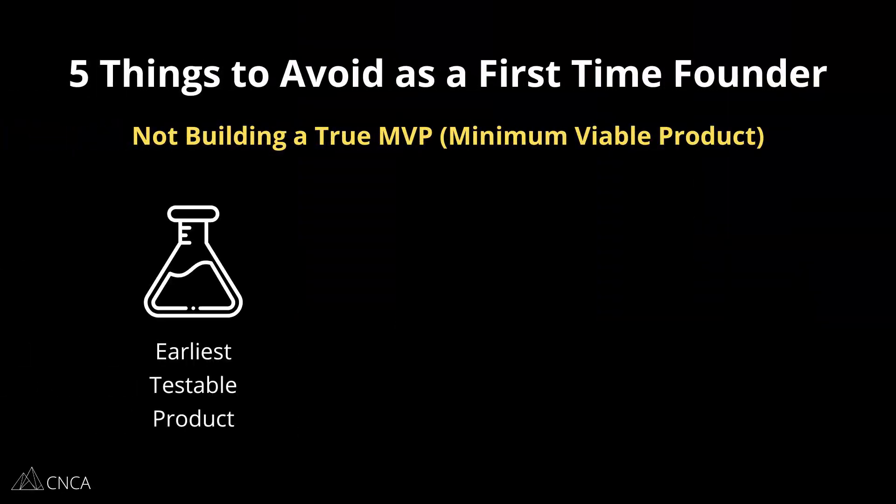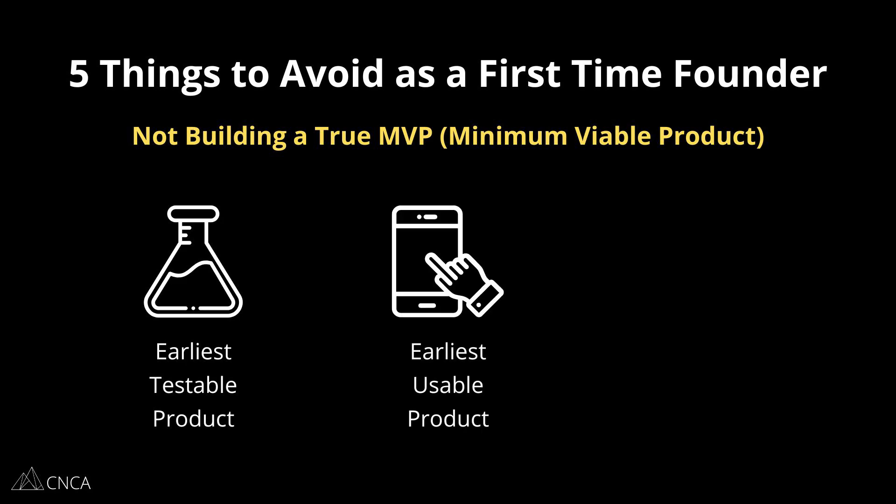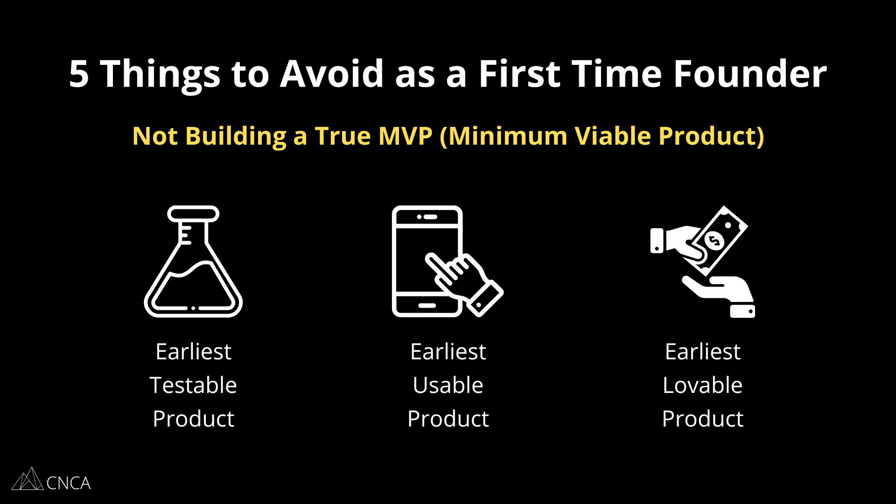The next common mistake is not actually building an MVP. You want to make sure that the first version of your application is truly a minimum viable product. Another way you can think about this is as the earliest testable product. This can quickly move into the earliest usable product, then the earliest lovable product.